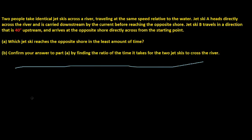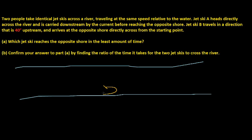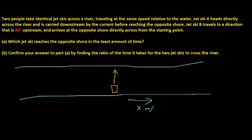Let's represent that in a little picture. We have our river, and we have Jetski A going directly across. Since the river is moving this way at x meters per second, this Jetski is also being carried this way at x meters per second. I'm going to call the jet ski's speed y meters per second.